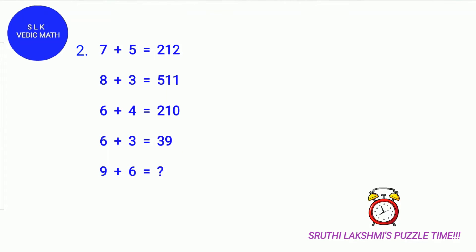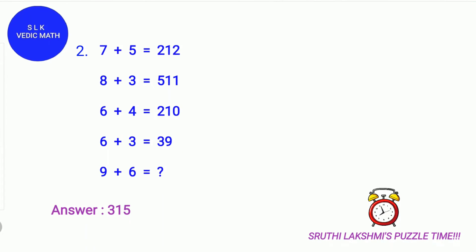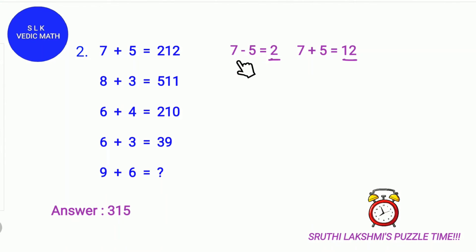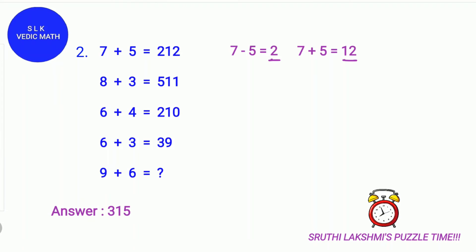Time's up! The answer is 315. For 7 plus 5, we did 7 minus 5, which is 2. And next, we did 7 plus 5, which is 12.